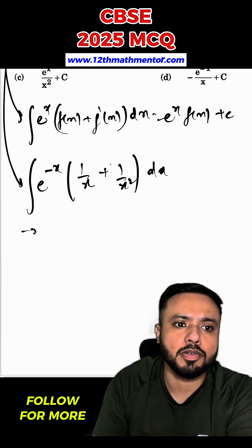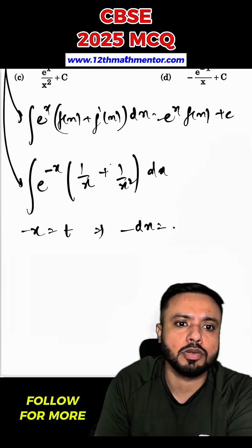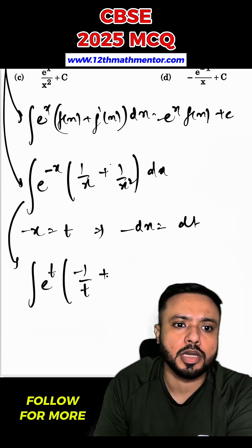Now I am going to assume negative x as t. So negative dx would be equal to dt. You can write this integral in terms of t as e raised to the power t, negative 1 upon t plus 1 upon t square into negative dt.